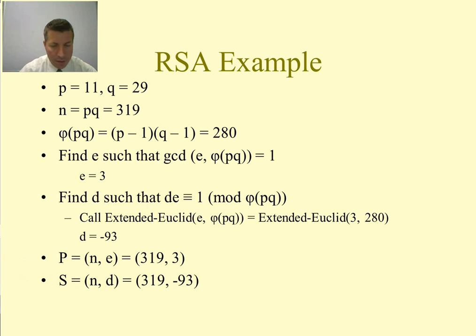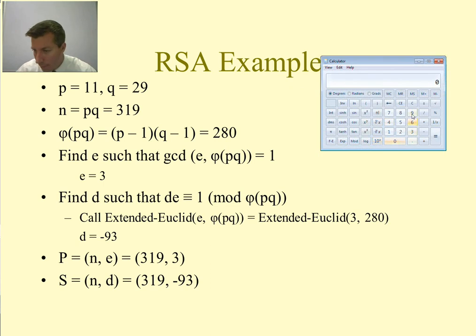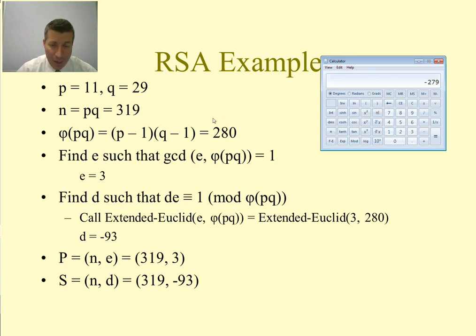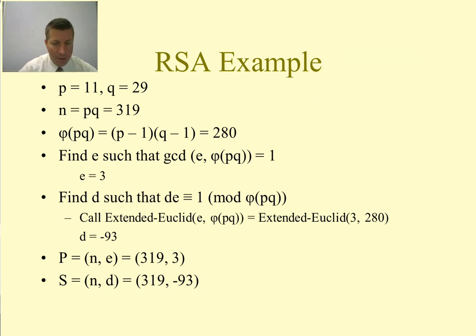To verify: using a calculator, −93 × 3 = −279. And −279 compared to 280 has a remainder of 1, confirming that −93 × 3 = −279 is indeed in the congruency set 1 mod 280. So our public key is (n=319, e=3) and our private key is (n=319, d=−93).